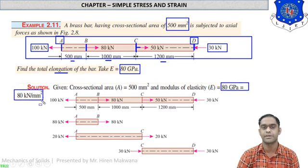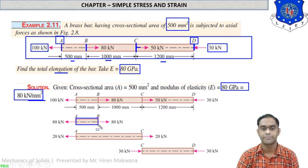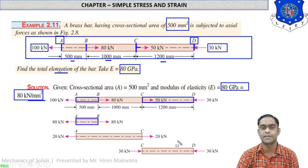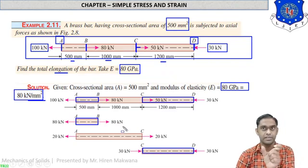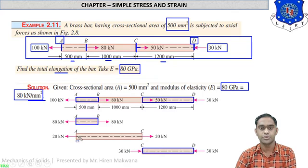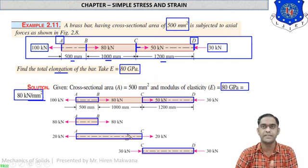Young's modulus is 80 GPa, which means 80 × 10³ N/mm². We need to find the total elongation. The bar is divided into three parts: AB (first part), CD (last part), and AC (middle combined part). The first and last parts AB and CD are separated, while the middle portion is drawn as AC.